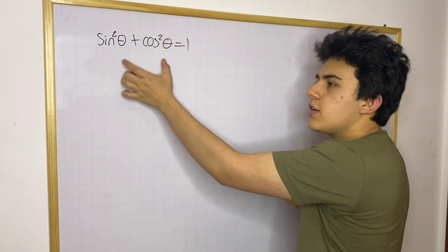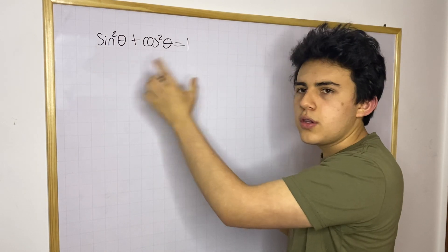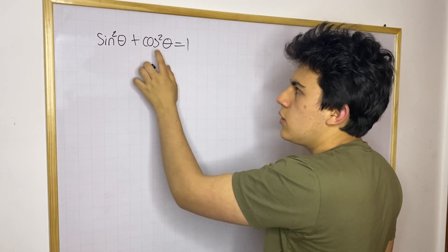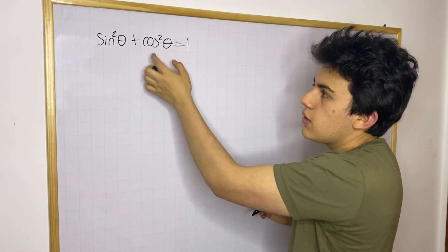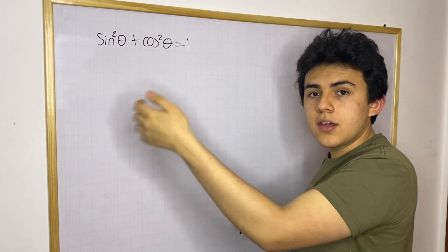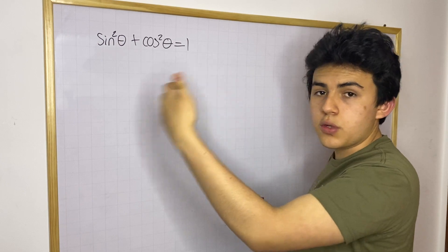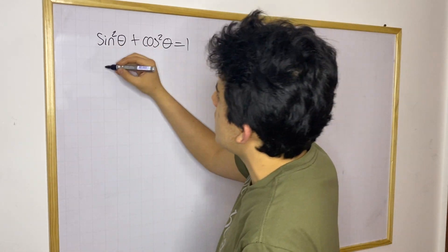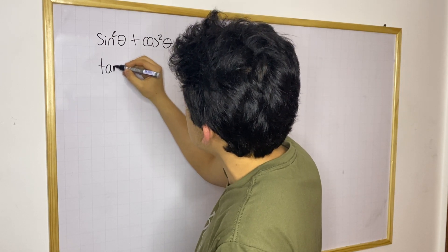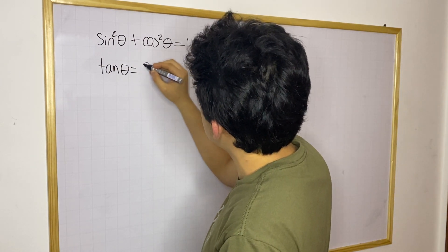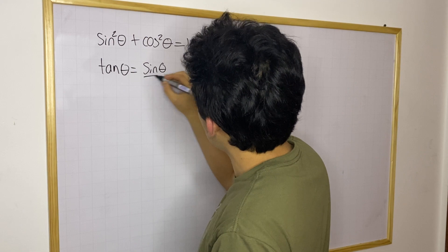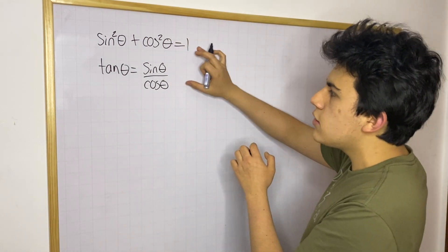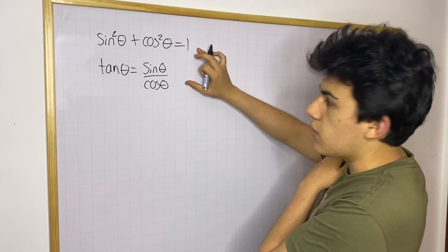This is one trigonometric identity that is super useful, because if you know the value of sine you also have the value of cosine — you can solve for it. And that means you also have the value for tangent, because another trigonometric identity is that tangent theta is equal to sine theta over cosine theta. Now I'm going to show you why these two equations are true.